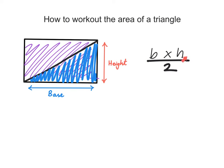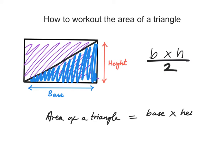So here we have worked out and derived a formula to work out the area of a triangle. The area of a triangle is equal to the base of the triangle multiplied by its height, divided by 2. In other words, the area of a triangle is half of the area of a rectangle.